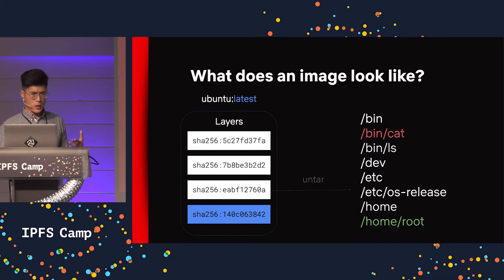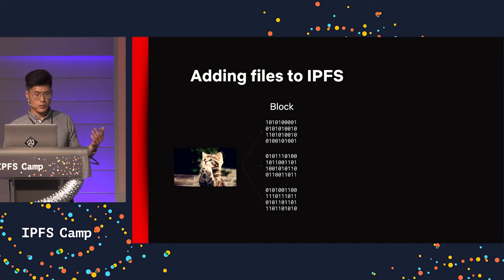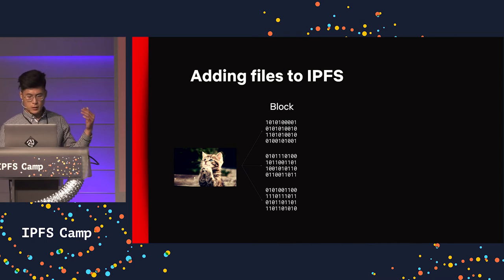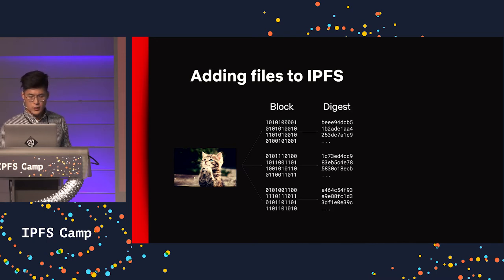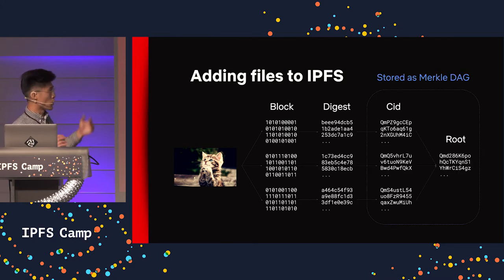So we can leverage IPFS as a CDN for container layers. But first, let's revisit how IPFS adds files. A large file in IPFS is broken down to blocks, hashed to a digest, and then stored as a self-described identifier known as a CID, and then hashed into a tree of nodes called a MerkleDAG, and the root CID is the identifier for the file.